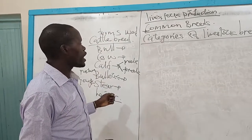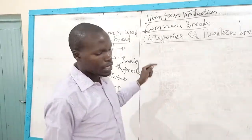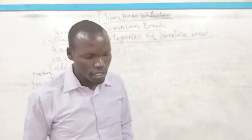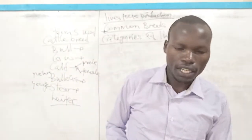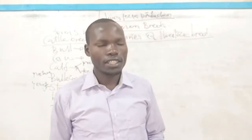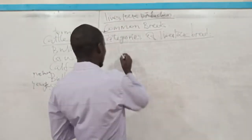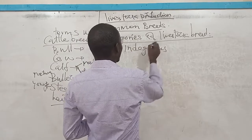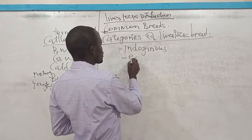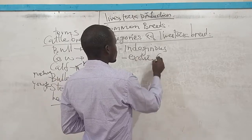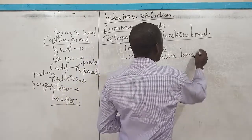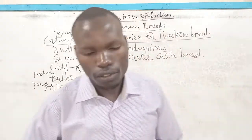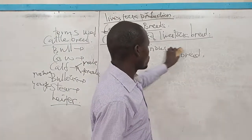Today let's go directly to categories of livestock breeds. The livestock breeds are categorized into two major categories. We have the first category — the indigenous cattle breed — and the second category is the exotic cattle breed. We shall start looking into details about the indigenous cattle breed.